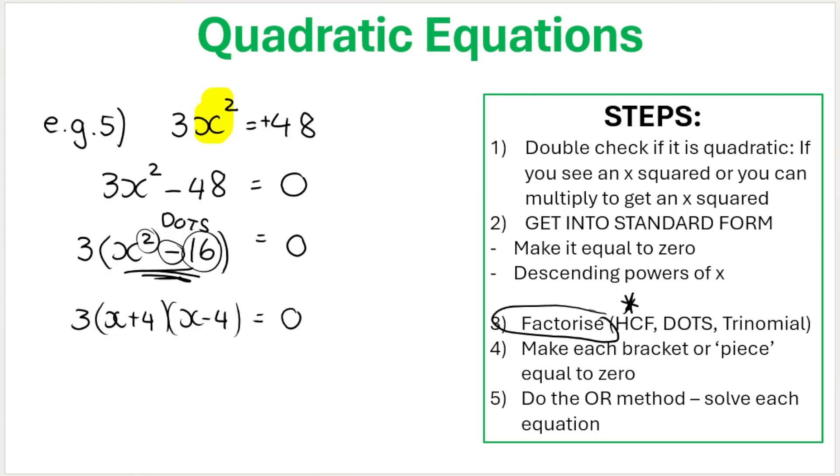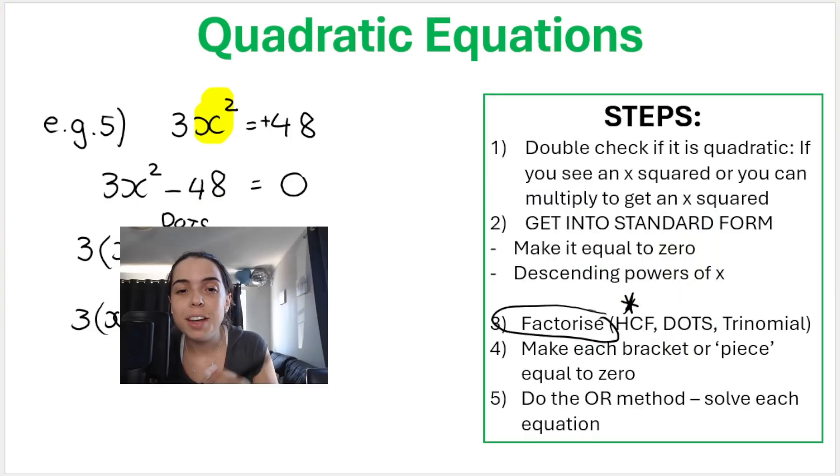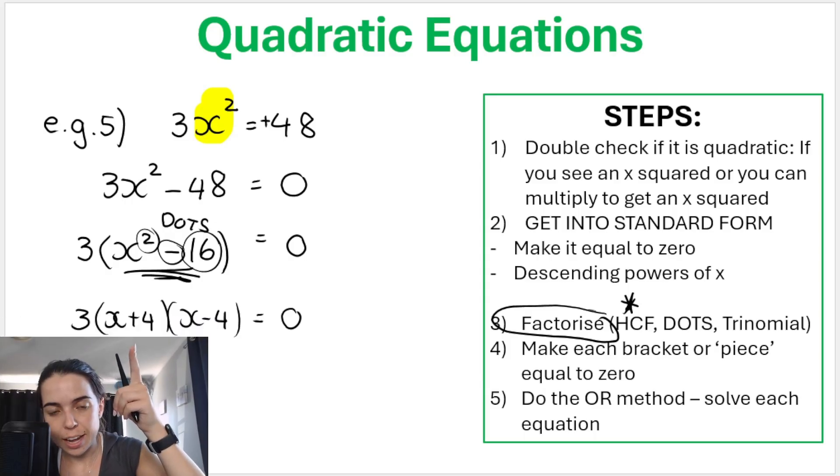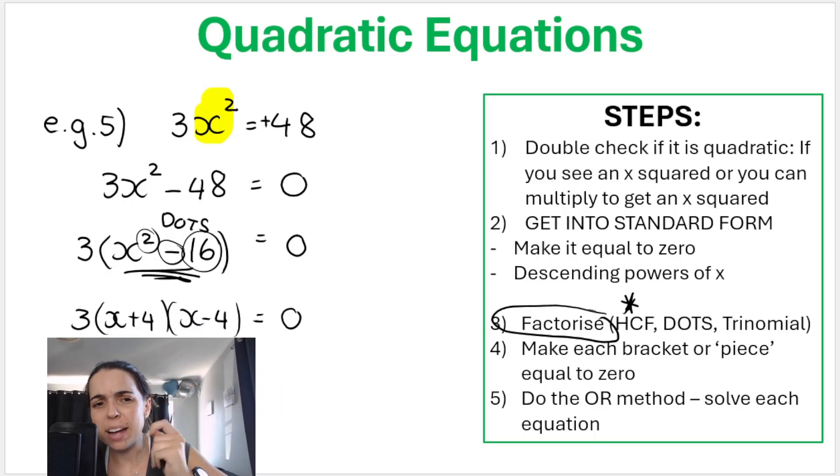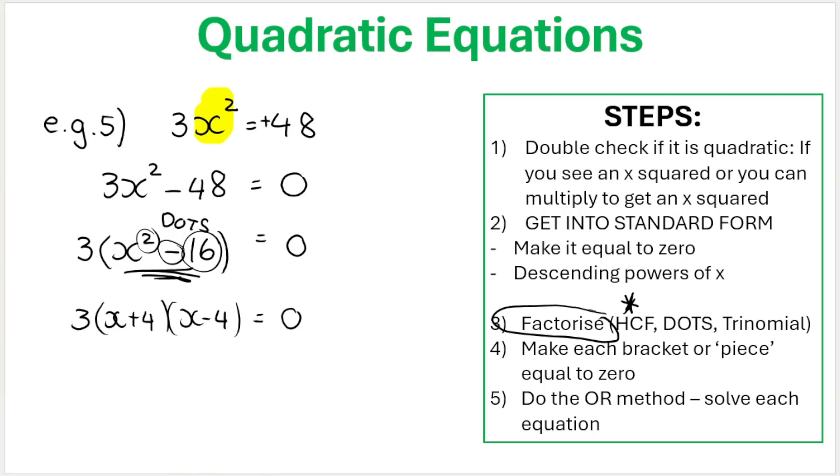According to my steps, you make each bracket or each piece equal to zero. But what I need you to understand is, yes, you can say x plus 4 equals zero or x minus 4 equals zero, but the 3 over there, you can't say 3 is equal to zero because it's not. What you can do is get rid of the 3 first. It's being multiplied by 3, so we divide by 3 on this side, divide by 3 on this side. If you divide 0 by 3, you get zero. Then you do the OR method. X plus 4 equals zero or x minus 4 equals zero. So x is equal to negative 4 or x is equal to positive 4. And then we've solved our quadratic equation correctly.